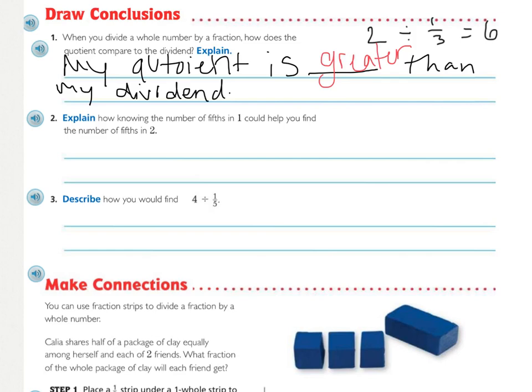So now looking at number two. Explain how knowing the number of fifths in one whole could help you find the number of fifths in two wholes. Think about our previous problem when we were dividing two by one fifth. We kind of looked at what was in one before moving on to the second whole. So how can knowing how many fractions or pieces or parts there are in one whole help you with finding that in two?